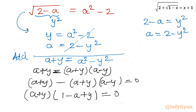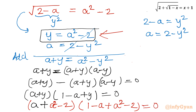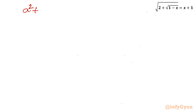Now substituting back the value of y, which is a squared minus 2. So (a plus (a squared minus 2))(1 minus (a minus (a squared minus 2))) equals 0. This gives us two quadratic equations: the first bracket is a squared plus a minus 2, and the second bracket is a squared minus a minus 1. So we have: a squared plus a minus 2 equals 0, and a squared minus a minus 1 equals 0.